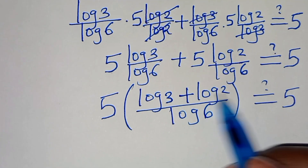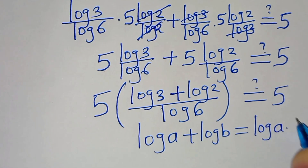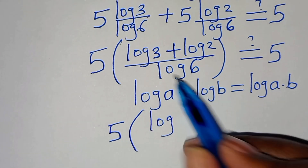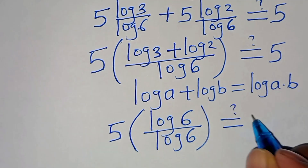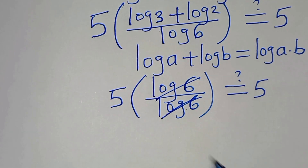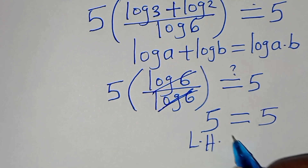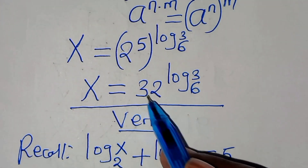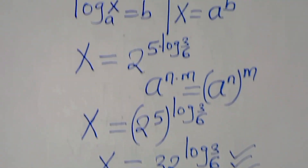Simplifying, log 6 and log 6 cancel, confirming that 5 equals 5. The left-hand side equals the right-hand side, which means the value of x — which is 32 raised to the power of log base 6 of 3 — actually satisfies the equation. Please follow the steps, like this video, and kindly subscribe.